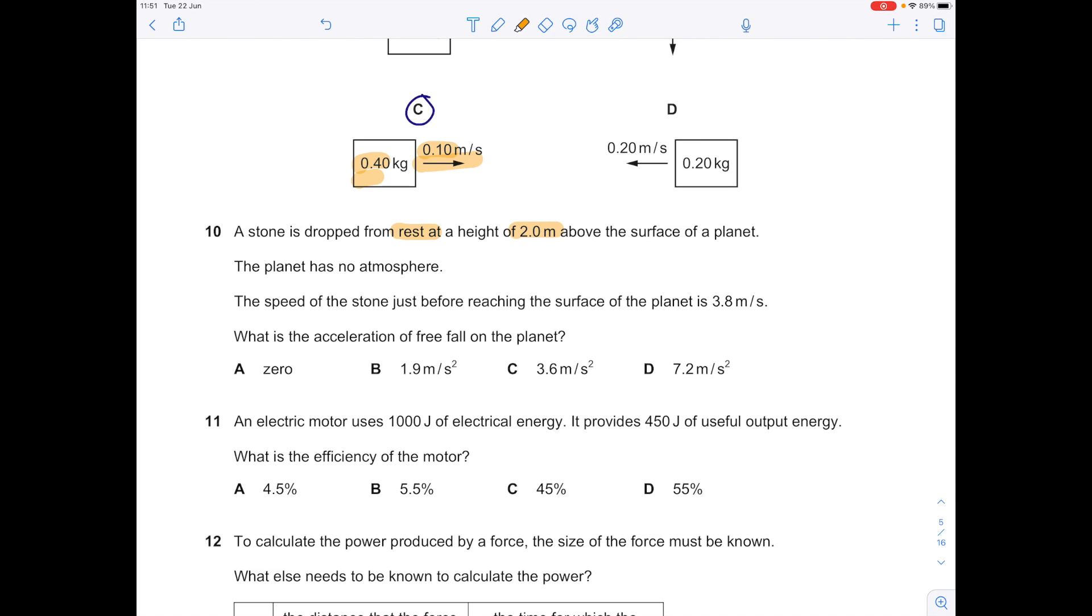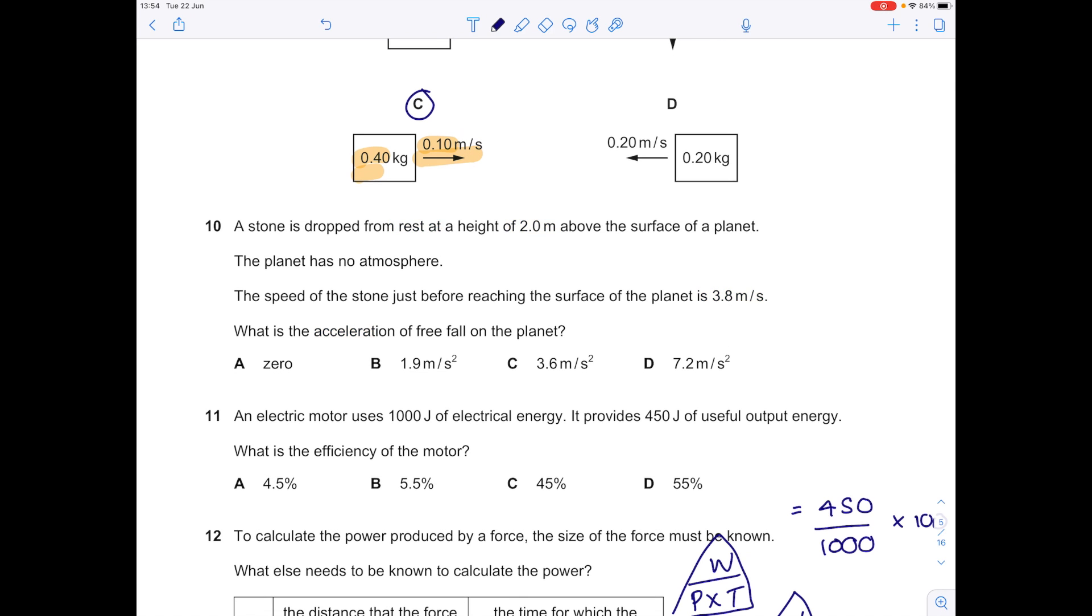The stone is dropped from rest at a height of 2 meters above the surface of a planet. The planet has no atmosphere. The speed of the stone just before reaching the surface of the planet is 3.8 meters per second. What is the acceleration of free fall of the planet? This is a SUVAT equation which is V squared equals U squared plus 2AS. V stands for final speed, which is here. U stands for initial speed, which we know is 0. A stands for acceleration and S stands for distance. So substitute those values into the equation. So it's 3.8 squared equals 0 plus 2 times A, which is what we're after, times 2, which is the distance. So 3.8 squared equals 4A. Then finally to find A, you do 3.8 squared divided by 4 to get A equaling 3.6, which is C.